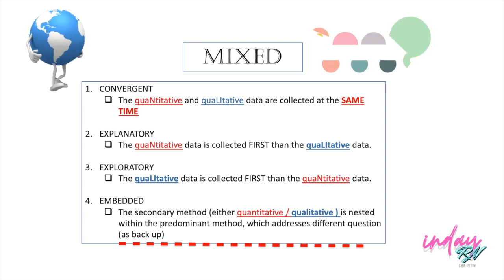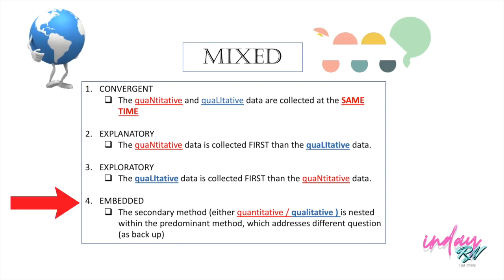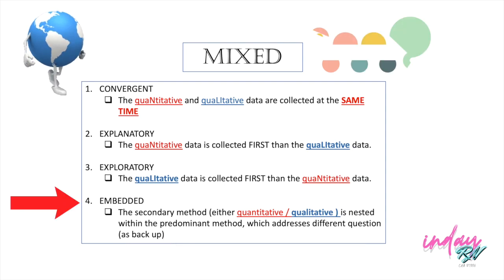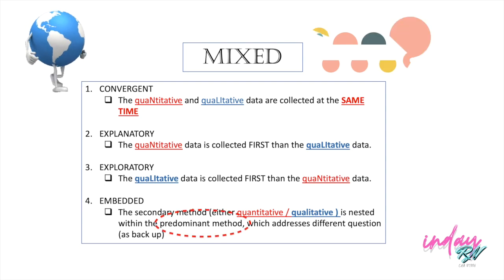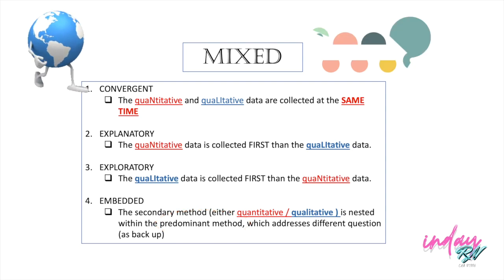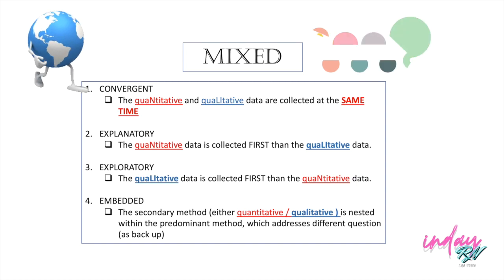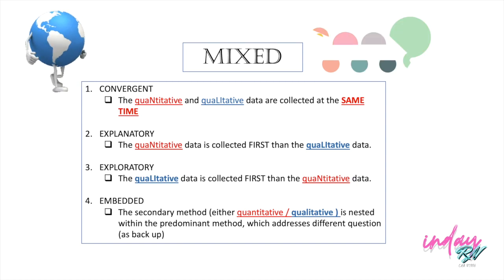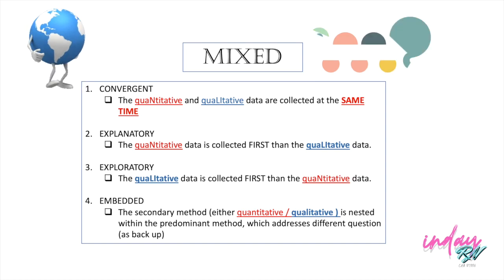Here in Embedded, the secondary method — either the quantitative or the qualitative — is not yet predominant, meaning it's a little bit hidden. The secondary method is not yet dominant; it's still hidden before, during, or after the interpretation of data.